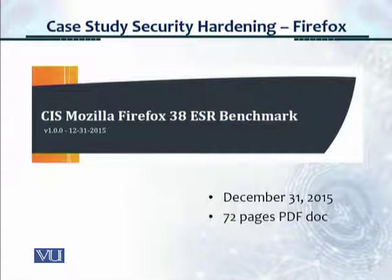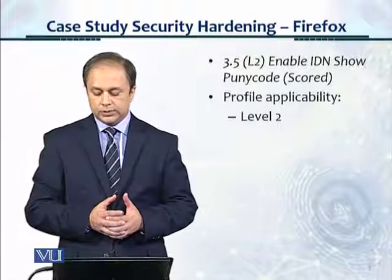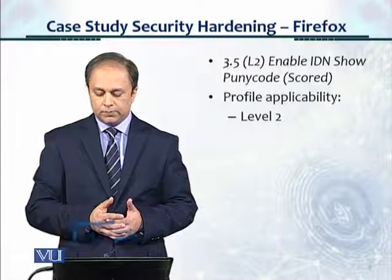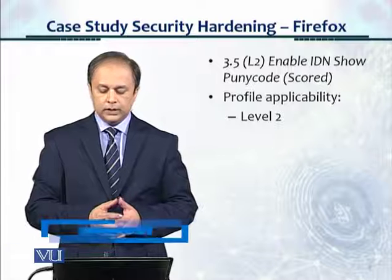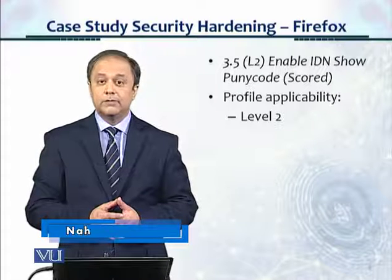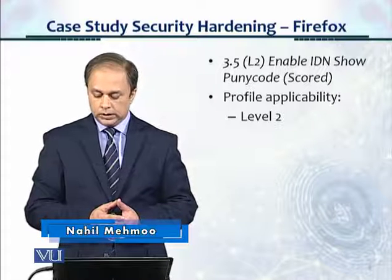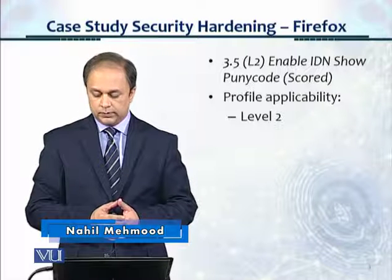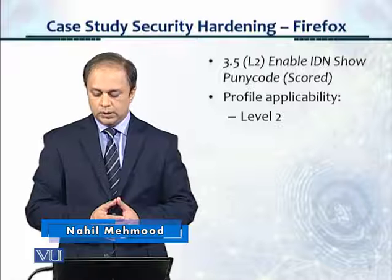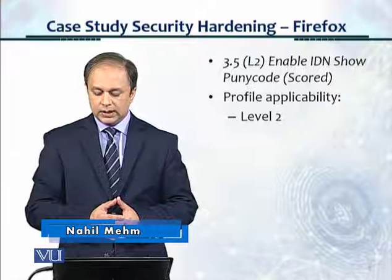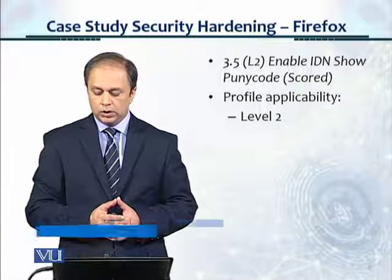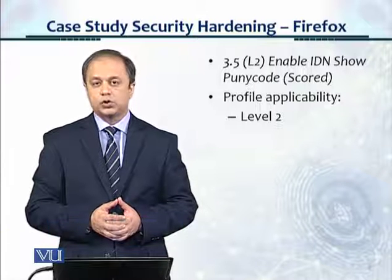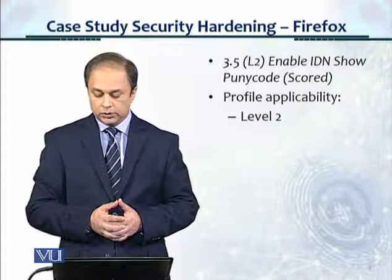The control that we've selected for this case study is 3.5. It's a level 2 security control — a serious one, a high severity control. And it says 'Enable IDN Show Punycode,' and it's scored as well.